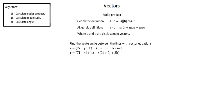We have a geometric definition and algebraic definition at the top of the screen for scalar product. The notation for scalar product is the dot between the two vectors. The geometric definition is the magnitude of vector 1 times the magnitude of vector 2 times the cosine of the angle between the two vectors. The algebraic definition is the sum of the products of the x, y, and z components of vector 1 and vector 2.